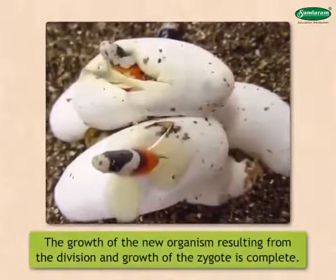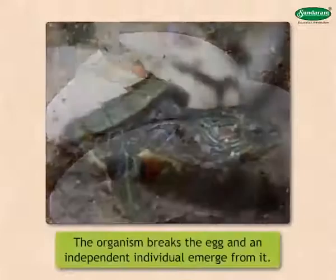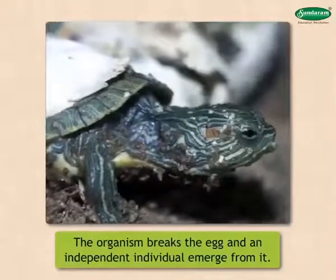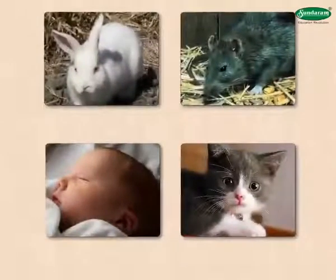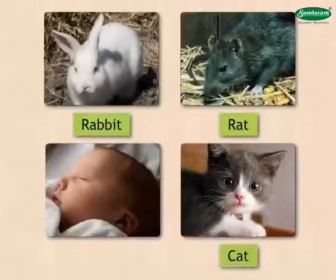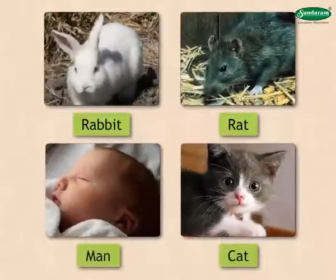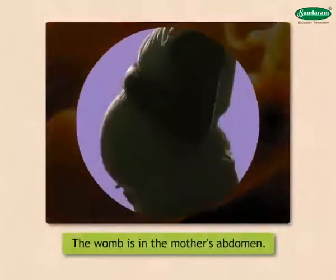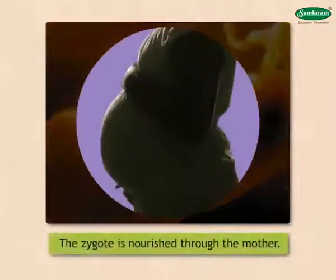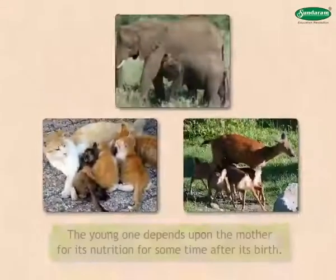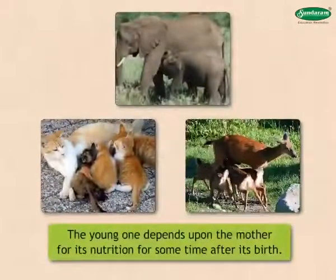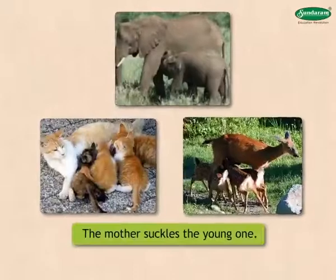When the growth of the new organism resulting from the division and growth of the zygote is complete, the organism breaks the egg and an independent individual emerges. The zygote of animals like rabbit, rat, cat, and man grows in the mother's womb, which is in the mother's abdomen. The zygote is nourished through the mother, and when its growth is complete, the offspring emerges from the womb. The young one depends upon the mother for its nutrition for some time after its birth, and the mother suckles the young one.